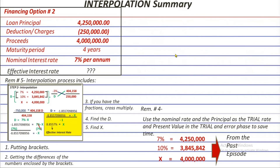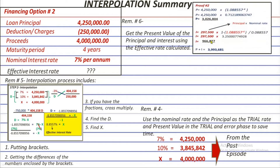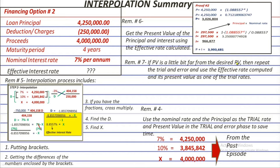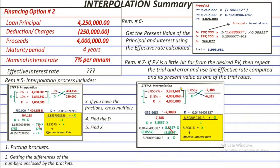Reminder number six: after getting the supposed effective rate from the first interpolation, calculate the present value of the principal and interest using that effective rate, just as we did in the past episodes. Reminder number seven: if the present value is a little far from the desired present value, repeat the trial and error using the effective rate computed and its present value as one of the trial rates. In the past episodes, the results of this step were used in the first line of the second interpolation.